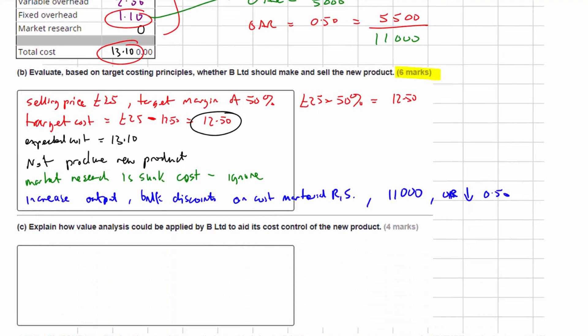So let's move on to part C now. Explain how value analysis could be applied by B Limited to aid its cost control of the product.